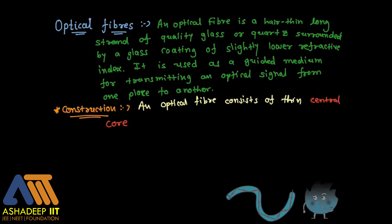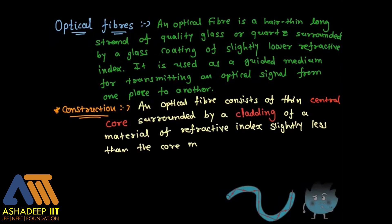Construction of Optical Fiber: An optical fiber consists of a thin central core with a very high refractive index — it is an optically denser material. That is surrounded by a very low, optically rarer medium which is known as cladding, which has a refractive index slightly less than the core material.